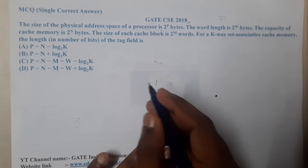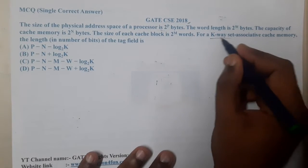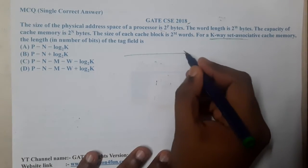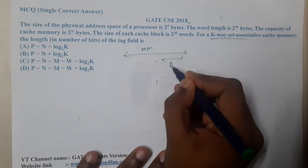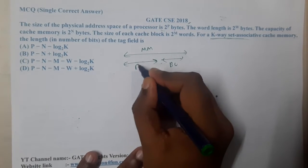First of all, which type is it? It is a K-way set associative. So let me draw the diagram first of all so that will be easy for us. Block offset, block number.